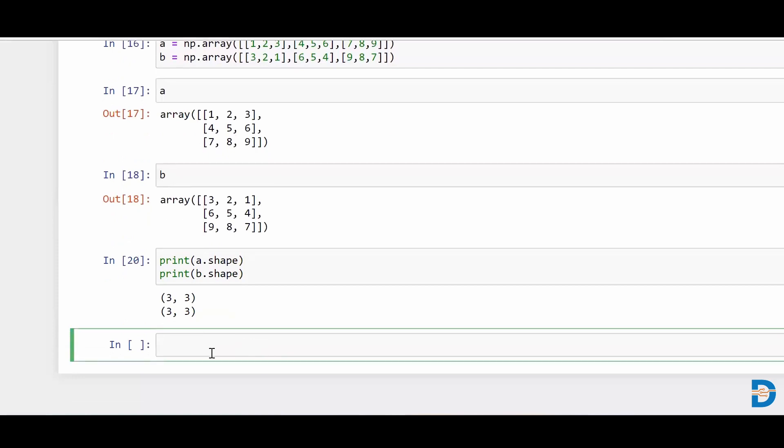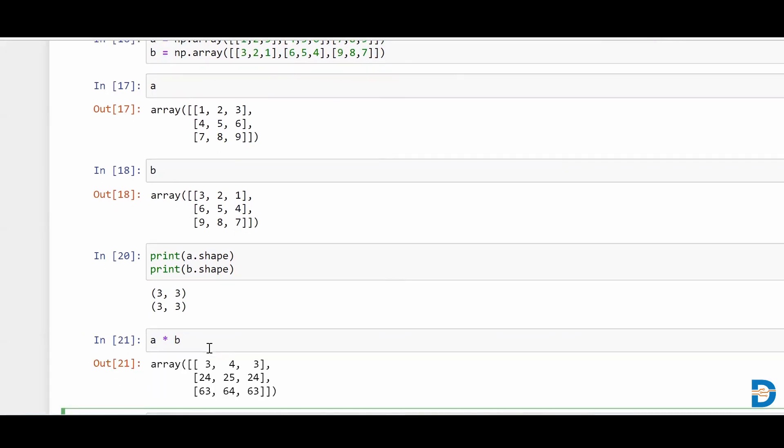So now if we want to have a multiplication, simply we can say A multiplied by B. And when we do this, we see that the resultant is nothing but the element-wise multiplication of both the matrices because both matrices are of same shape.